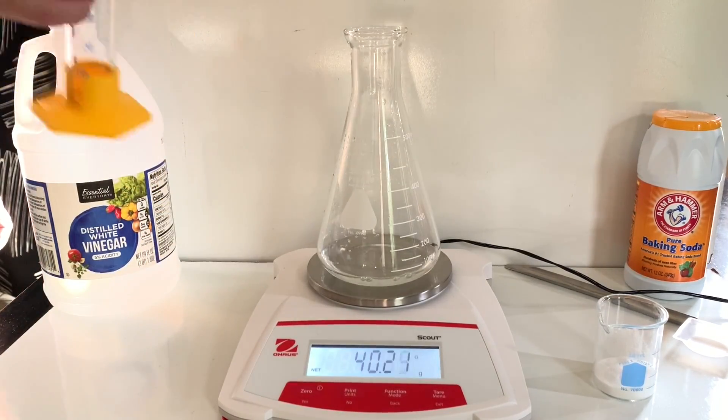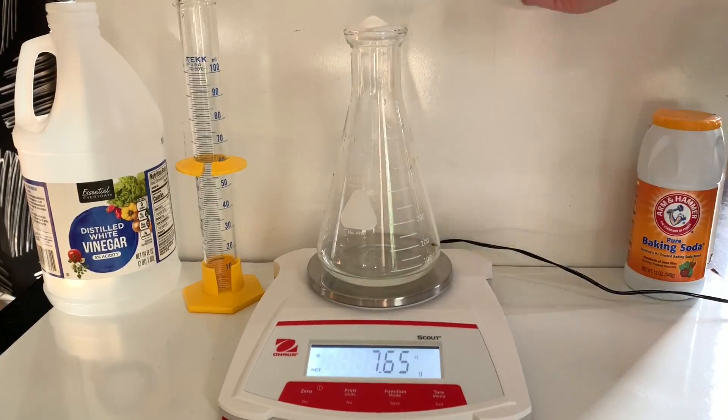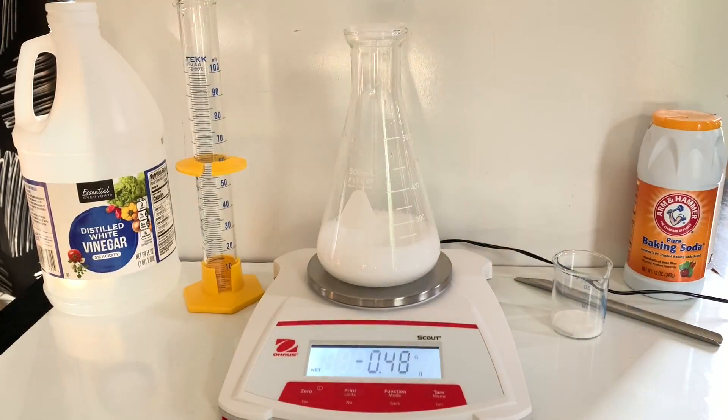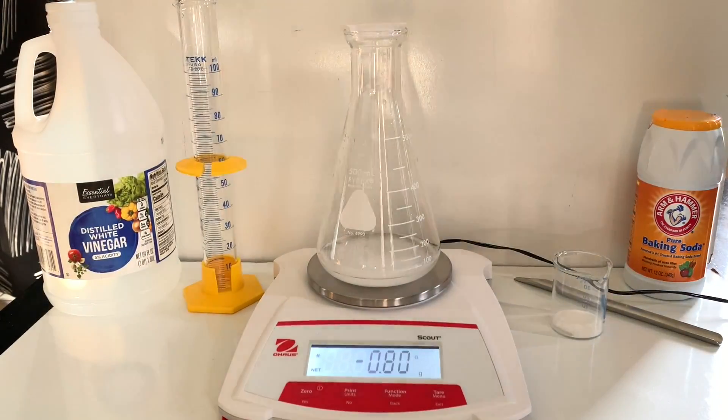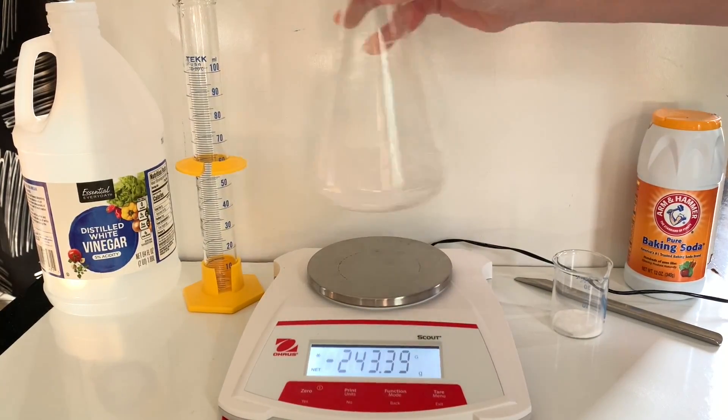I repeated the experiment but this time I placed all of my equipment and the reactants on the balance all at one time and then after I added my baking soda to the vinegar you can watch the mass decrease which is the approximate mass of carbon dioxide that's being released into the air in this experiment.